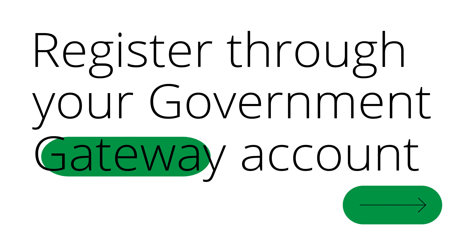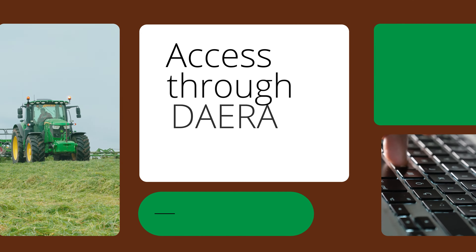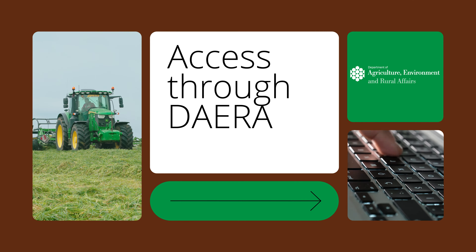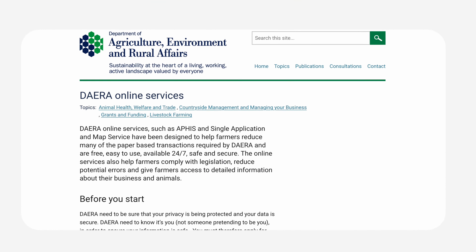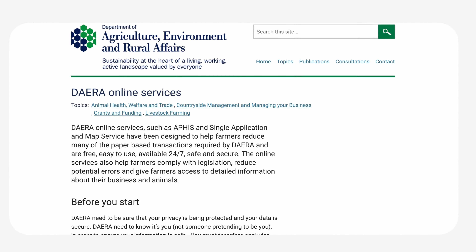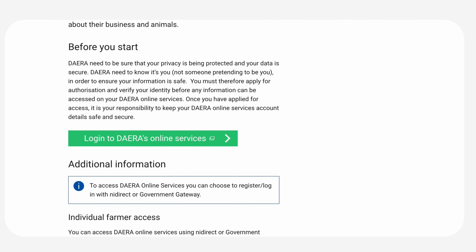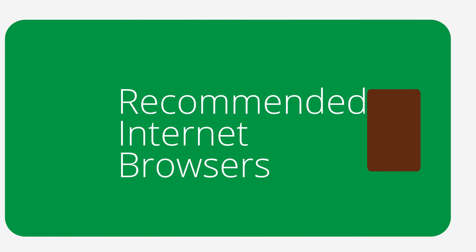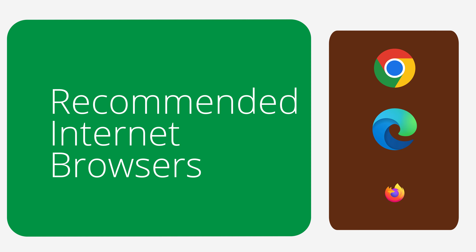The registration for the Soil Nutrient Health Scheme is through the Farmers Government Gateway Account. Access through the DERA Online Services page and click on the login to DERA's online services via the green box located at the bottom of the page. See the link below. Please note the recommended browsers are Chrome, Microsoft Edge or Firefox.